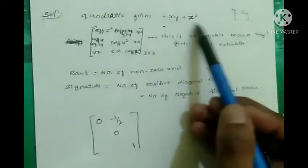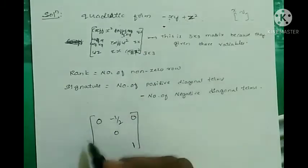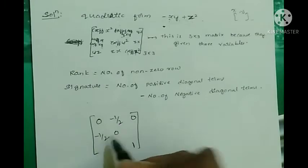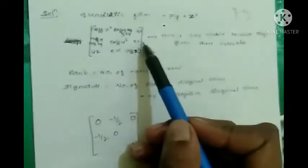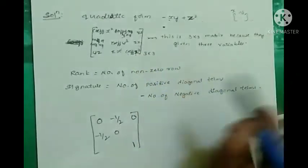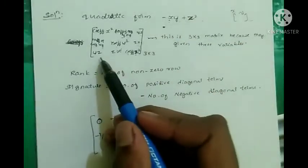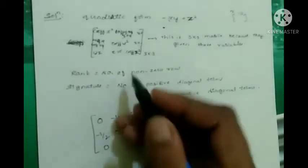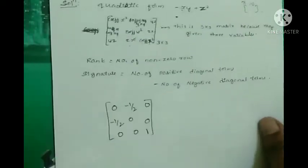The coefficient of yz — there is no yz term, so that entry is zero. The coefficient of xy gives minus one-half again for the symmetric position. The coefficient of zx — not given, so zero. The coefficient of yz is also not there, so zero. And zx again is zero. We now have our complete three by three matrix.